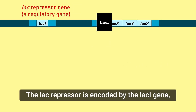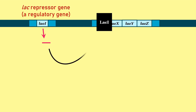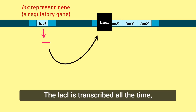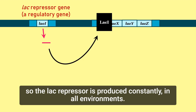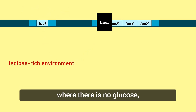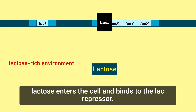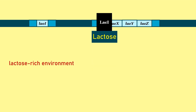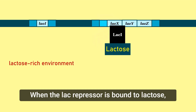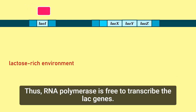The lac repressor is encoded by the lac I gene, a regulatory gene that has a different promoter sequence to the lac operon. The lac I gene is transcribed all the time, so the lac repressor is produced constantly in all environments. When the bacteria find themselves in an environment where there is no glucose but lactose is available, lactose enters the cell and binds to the lac repressor. When the lac repressor is bound to lactose, it can no longer bind to the operator of the lac operon. Thus, RNA polymerase is free to transcribe the lac genes.